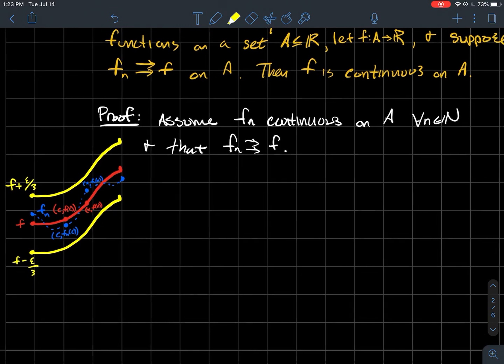So what's the proof look like? So let's assume each fn is continuous and let's assume that fn converges uniformly to f. And what does that mean? So typically when you're doing these proofs, you want to try to write out some definitions of things because that is what you start working with, that is gives you your footing.